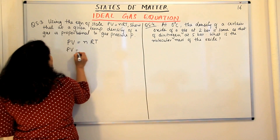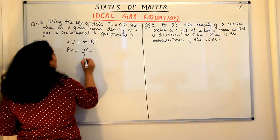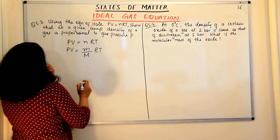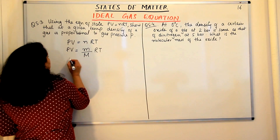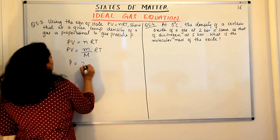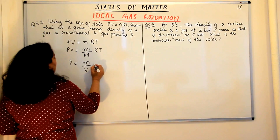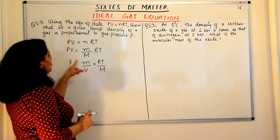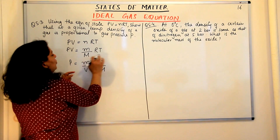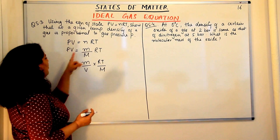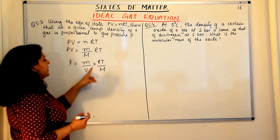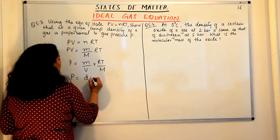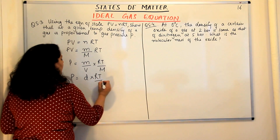PV therefore equals mass (small m) upon molar mass (M) into RT. So PV = m/M × RT. Now, rearranging: pressure equals mass upon volume into RT upon M. I'm shifting M here — it's basically the same thing, it is mRT over M. I've dropped the volume and placed it under the small m so that I can get density. So now we get: pressure equals density (D) into RT upon M.